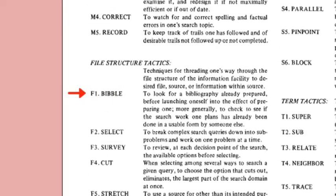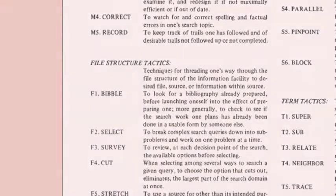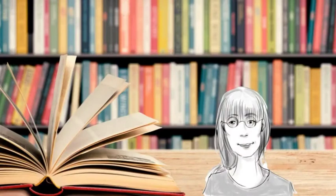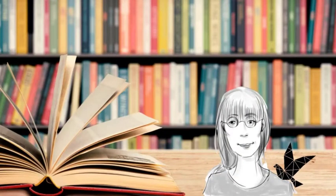To bibble is an entirely different way to search. It means to look for a bibliography that is already prepared, rather than conducting your own search from scratch. My dove, Bibble, is named in honor of these ideas and to celebrate information science.